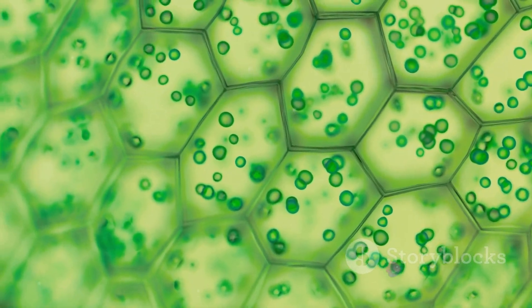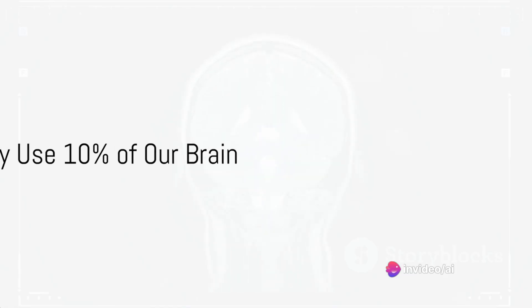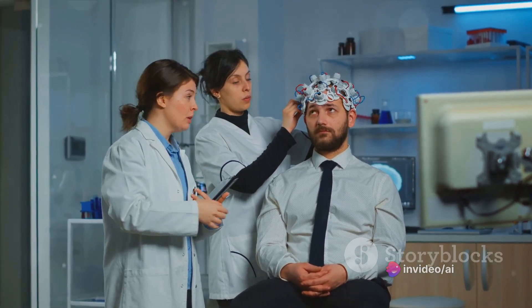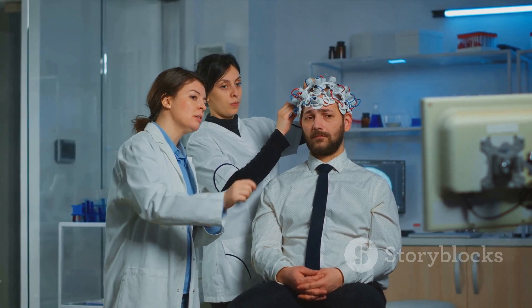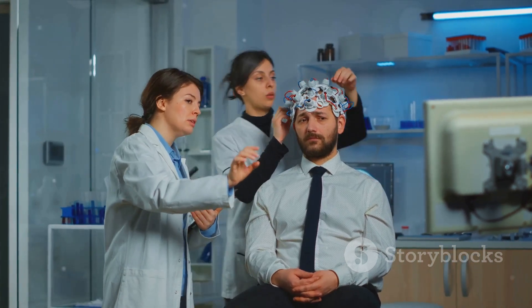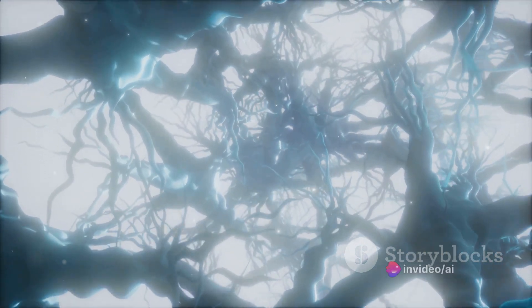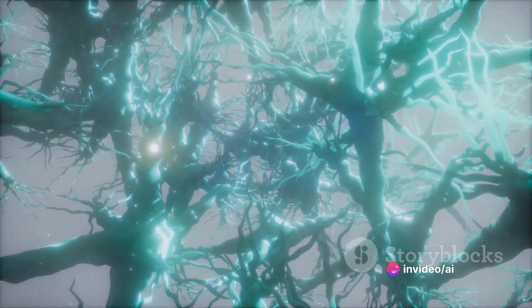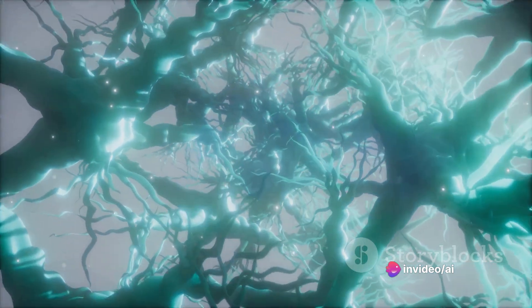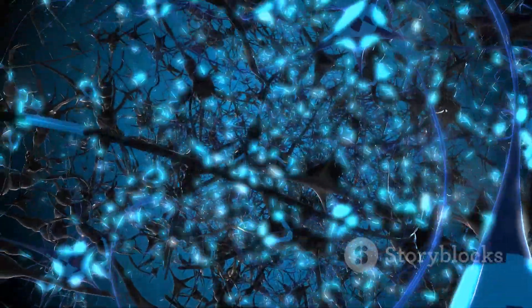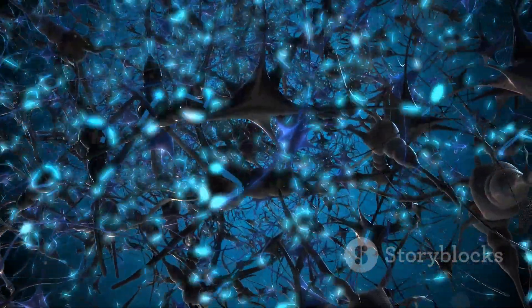Are we really only using 10% of our brains? This is a popular myth that's been floating around for years, often used in movies and TV shows. But is it true? Spoiler alert, it's not. Let's start with the basics. Our brain is a complex organ, made up of billions of neurons or nerve cells, that communicate with each other to control our thoughts, emotions, and actions. These neurons are always active, even when we're sleeping.